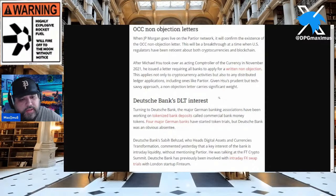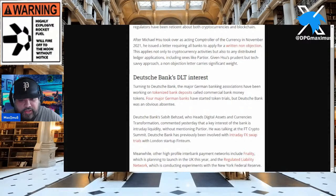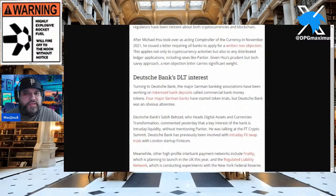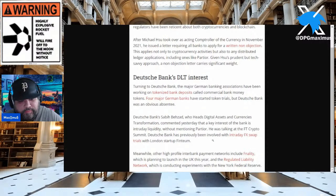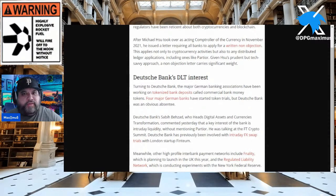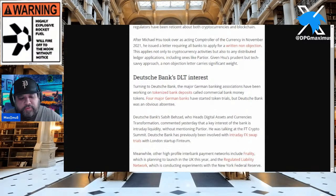Turning to Deutsche Bank — the major German banking associations have been working on tokenized bank deposits called commercial bank money tokens. Four major German banks started token trials, but Deutsche Bank was an obvious absentee. Deutsche Bank's digital assets and currency transformation lead commented that a key interest of the bank is intraday liquidity. We've done deep dives on intraday liquidity and institutional swaps — if you've been with this community over a year, you remember.